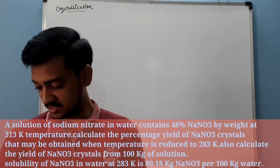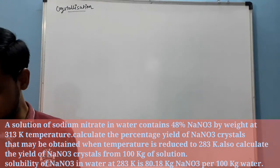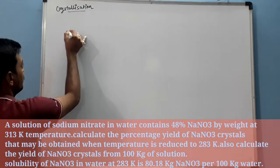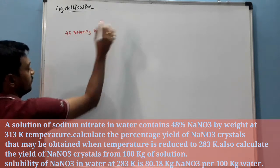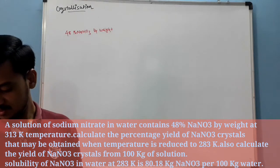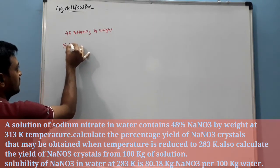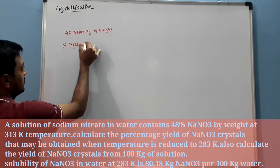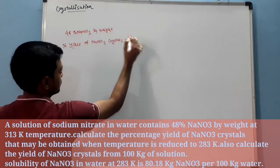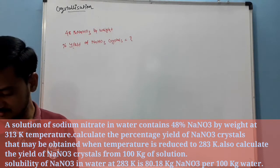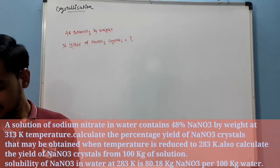A solution of sodium nitrate in water contains 48% NaNO3 by weight at 313 Kelvin. Calculate the percentage yield of NaNO3 crystals that may be obtained when temperature is reduced to 283 Kelvin. Also calculate the yield of NaNO3 crystals from 100 kg solution.